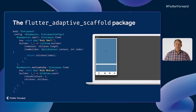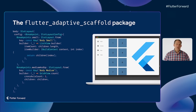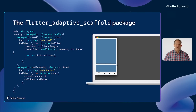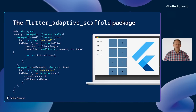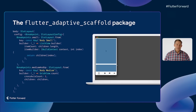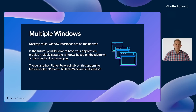Flutter's Adaptive Scaffold is a high-level layout widget that can respond to view geometry changes to rebuild the widget tree to match changing layout conditions based on predefined size breakpoints. It's part of the Flutter Adaptive Scaffold package published and maintained by the Flutter team. This is the example from the package, which changes from a list view to a grid view when the appropriate breakpoints are satisfied. This example shows the portion of the build function with layouts for Breakpoints.small and Breakpoints.mediumAndUp. In the future, you'll be able to have your application provide multiple separate windows based on the platform or form factor it's running on. There's another Flutter Forward talk on this upcoming feature called Preview: Multiple Windows on Desktop by Michael Gotterbauer, linked in the description of this video.